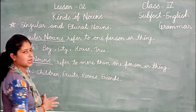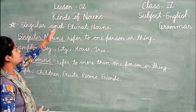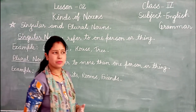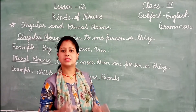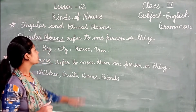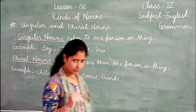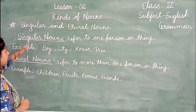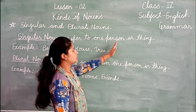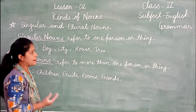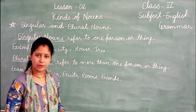The first thing we will start with is Singular and Plural Nouns. Singular means one thing — if any person or thing is single, it is called singular. Plural means where any thing is more than one.